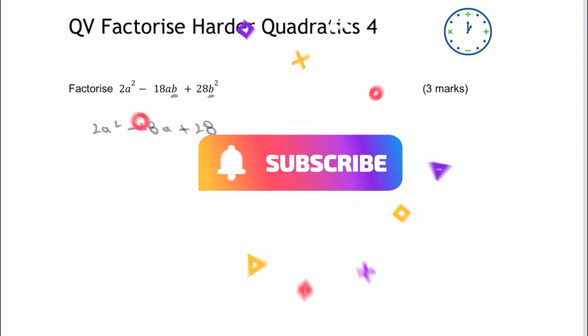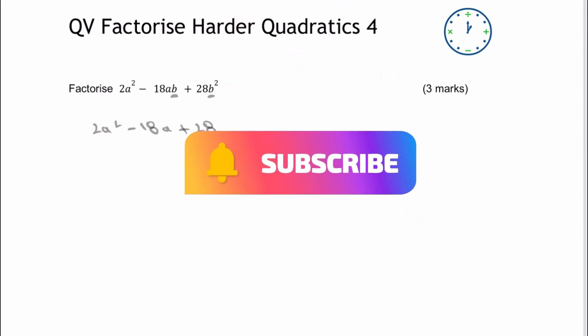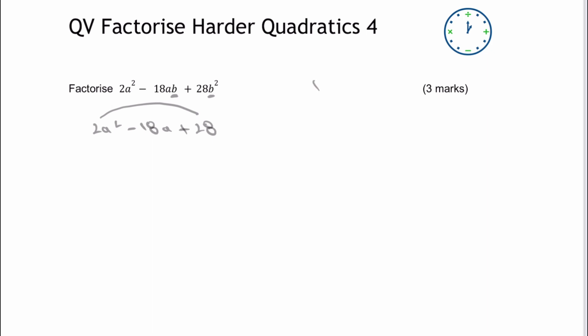And the way I'm going to do that is exactly the same as I've done in the previous videos, in that I'm going to multiply those two together, so I'm going to get in this particular case positive 56, and I'm looking for two numbers that when I add them together, in this case, make minus 18.